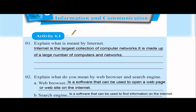I hope you remember about networks. A network can be two or more computers connecting to each other — it can be wired or wireless. If you connect those kinds of networks together, then we can have a large collection of computer networks. The internet is the largest collection of computer networks; it is made up of a large number of computers and computer networks.